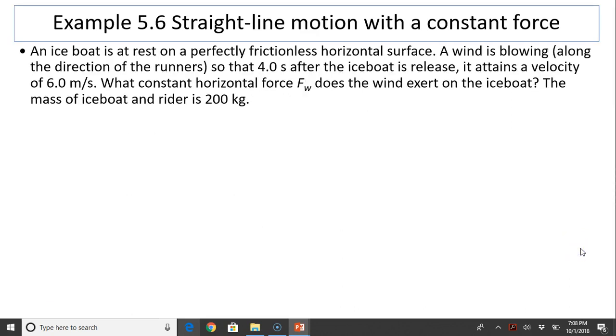Example 5.6, straight line motion with a constant force. An ice boat is at rest on a perfectly frictionless horizontal surface. Wind is blowing along the direction of the runners. So that four seconds after the ice boat is released, it attains a velocity of six meters per second. What constant horizontal force Fw does the wind exert on the ice boat? The mass of the ice boat and rider is 200 kilograms.